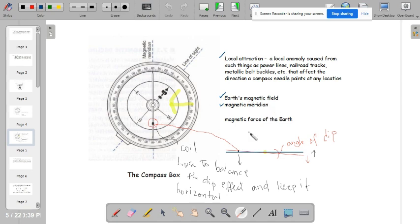The displacement of that needle is what you call the angle of dip. So there is a coil here. This coil is used to balance the dip effect and keep it horizontal. So this also makes or it can help the magnetic needle to stabilize or to counter any effects that causes the needle to be dipped.